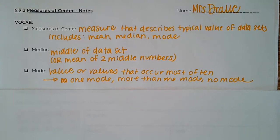When you have two numbers in the middle, you find the mean of those two numbers to get your median. Your mode is a value or values that occur most often. You could have one mode, more than one mode, or you could have no mode.